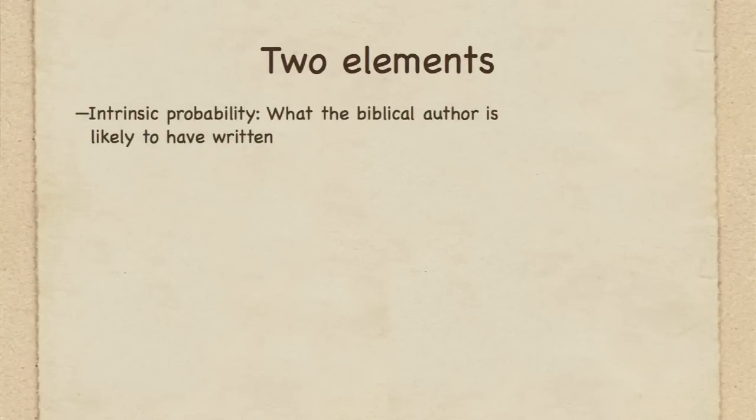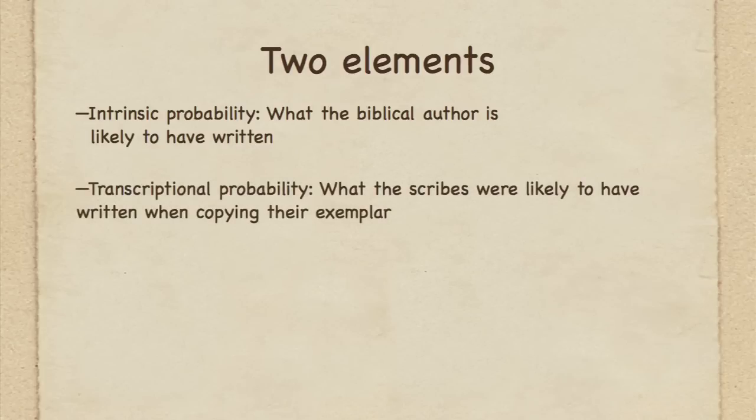As we mentioned in the last lecture, there are two aspects to the nature of doing textual criticism: external evidence and internal evidence. External evidence looks at the material data that we actually have to try to get back to the wording of the autographic or original text. Internal evidence looks at what we think an author would be likely to do and what we think a scribe would be likely to do. Those are the two aspects of internal evidence: one is called intrinsic probability — what the author is likely to do — and the other is called transcriptional probability — what the scribe is likely to do.